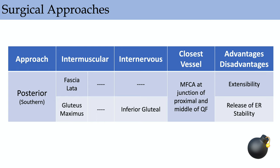The posterior approach is the most extensile, between the fascia of the gluteus maximus. You're splitting the gluteus maximus in its avascular plane; it's supplied primarily by the inferior gluteal artery. You do have to take down the external rotators and there is some risk for instability, but in modern times the risk of dislocation has been pretty low across the board regardless of approach.